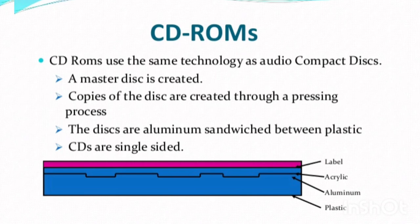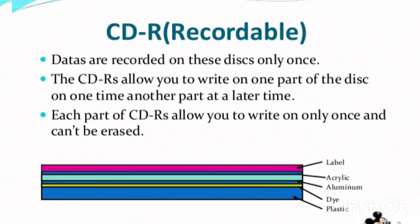The disks are made up of aluminium sandwiched between plastic. In the CD-ROM, we can record data only once. But after the data is recorded, we cannot alter or erase it. Imagine if there are two parts — you can write on one part only one time and then write on another part at a later time, but you cannot alter or erase. Once you write the CD, you cannot erase or rewrite on the CD-ROM.